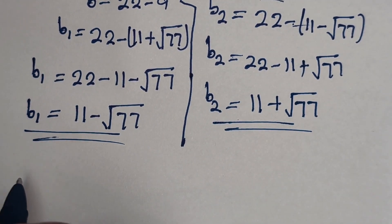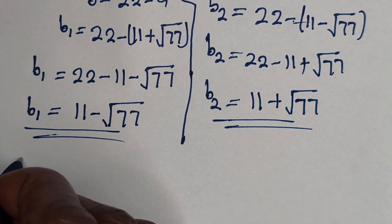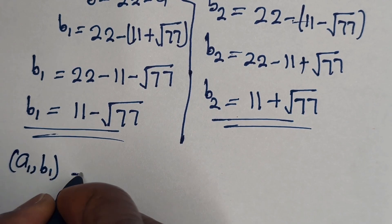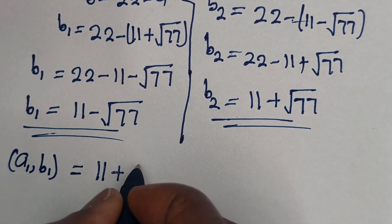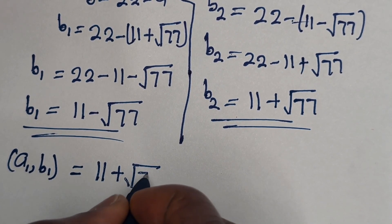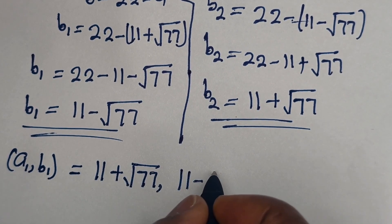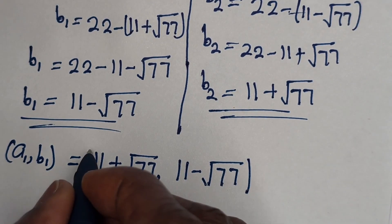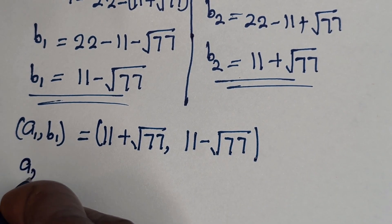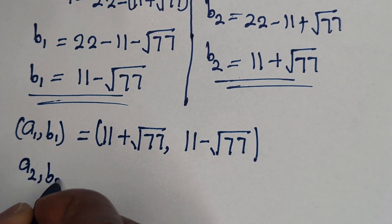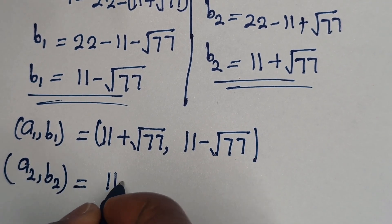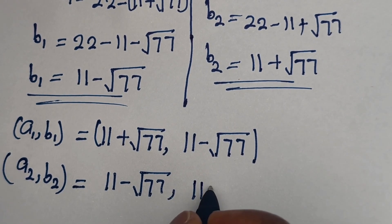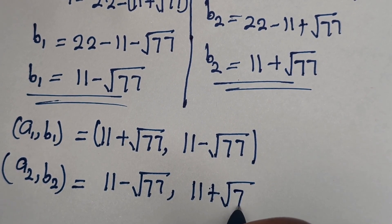Therefore our final answers are: A1 comma B1 is equal to (11 plus square root of 77, 11 minus square root of 77), and A2 comma B2 is equal to (11 minus square root of 77, 11 plus square root of 77).